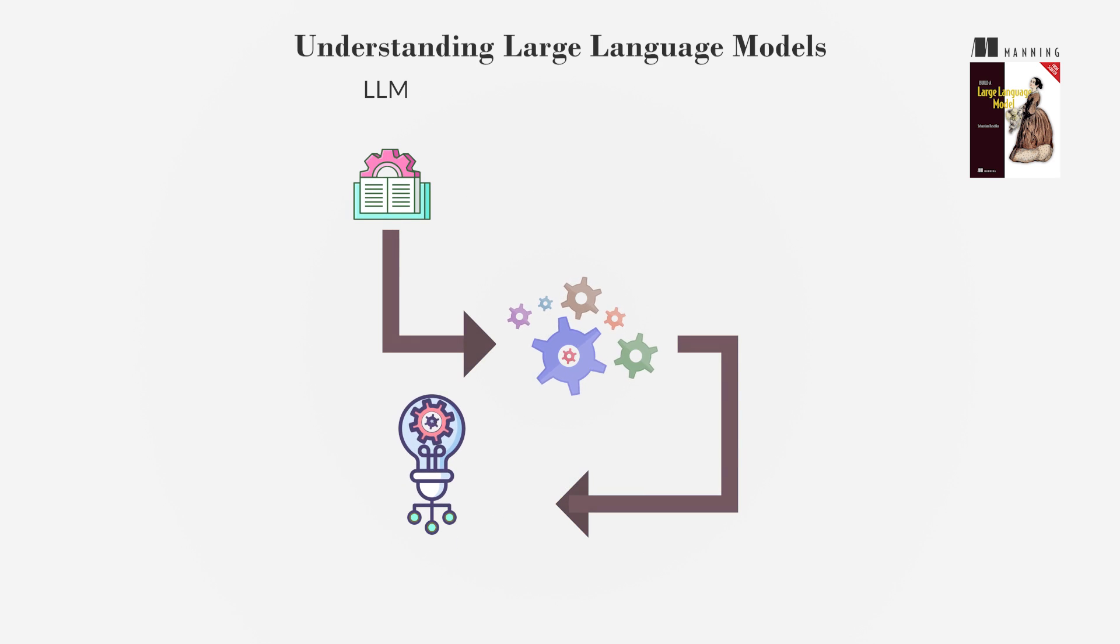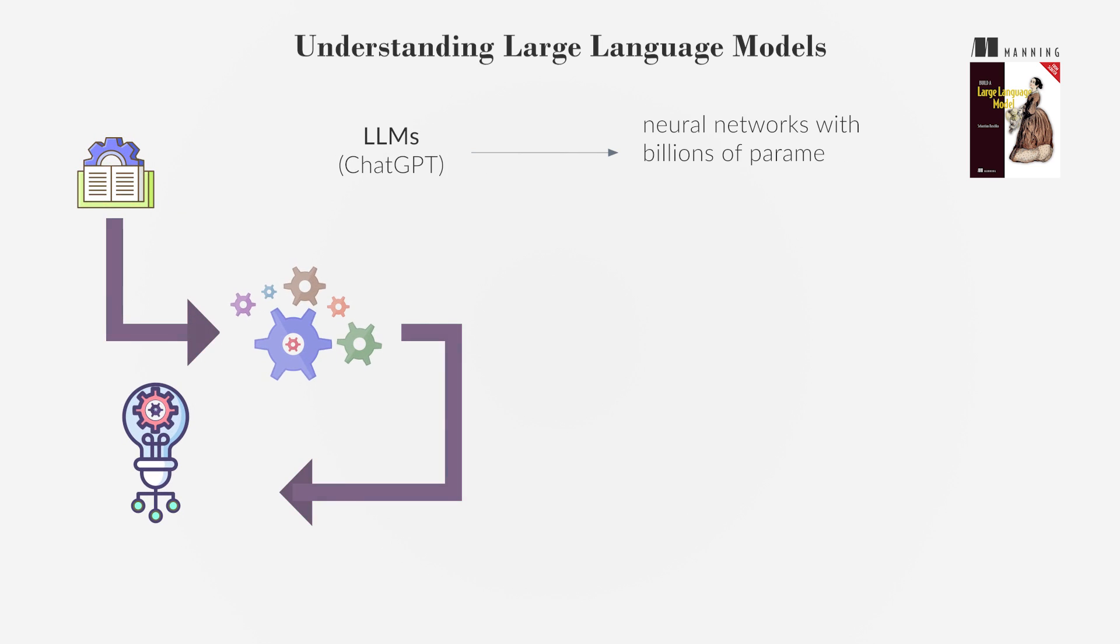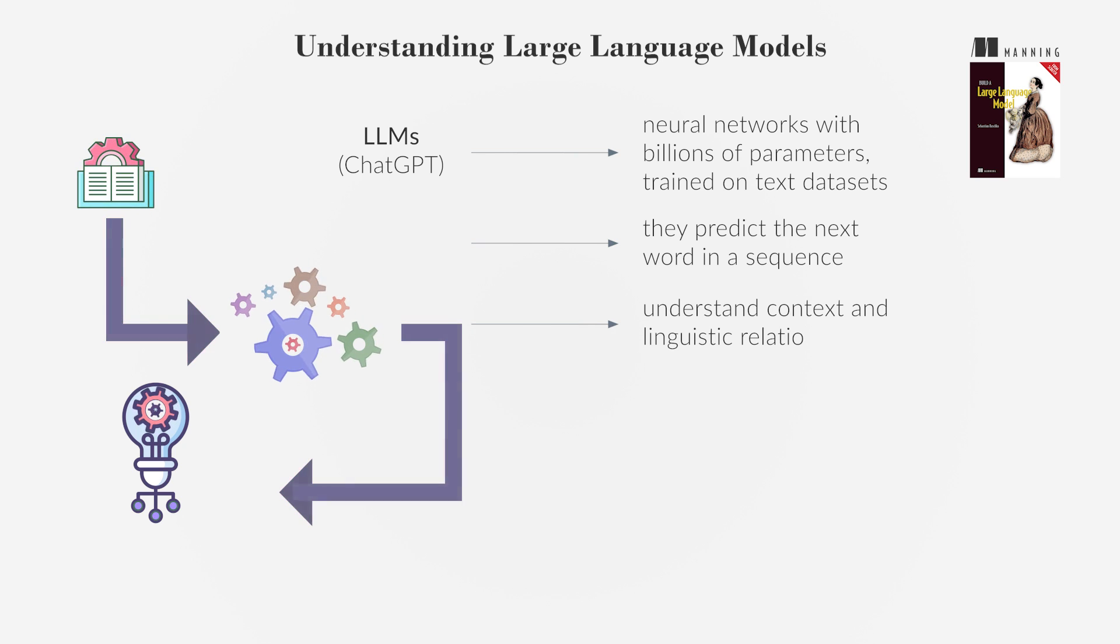Large language models, LLMs like ChatGPT, are neural networks with billions of parameters trained on vast text datasets. They predict the next word in a sequence, enabling them to understand context and linguistic relationships.